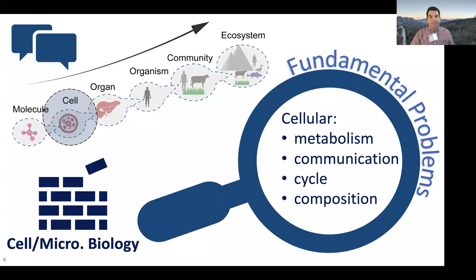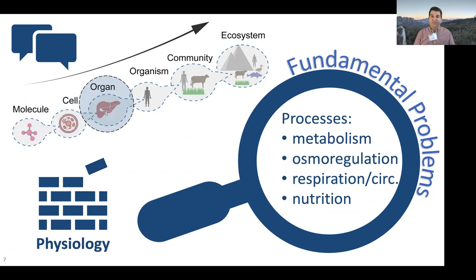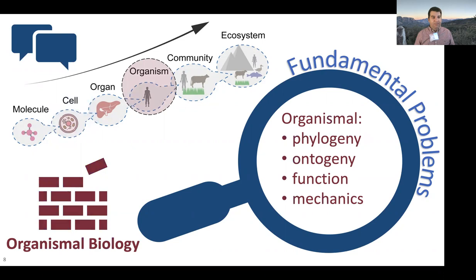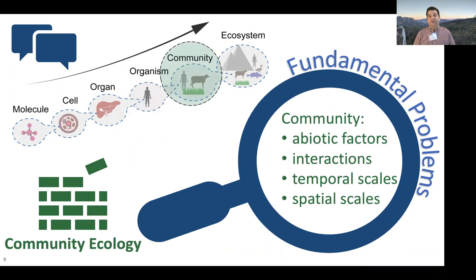Cell and microbial biologists focus on what a cell is, what's in a cell, how cells proliferate, and so on. Pop up a little farther to the organ scale — that's where physiology comes into play: homeostatic processes, metabolism, respiration, nutrition. A little farther up, those organs turn into organisms at the organismal level. In organismal biology, that's where we start seeing evolution becoming much more apparent and important. Then at the community scale, where organisms come together, spatial and temporal scales become very explicit.